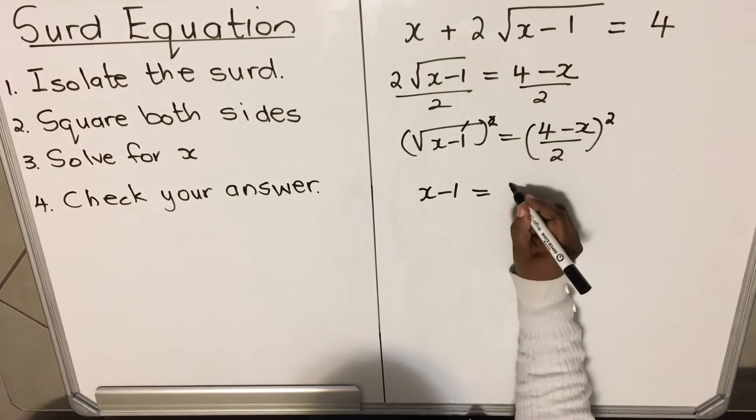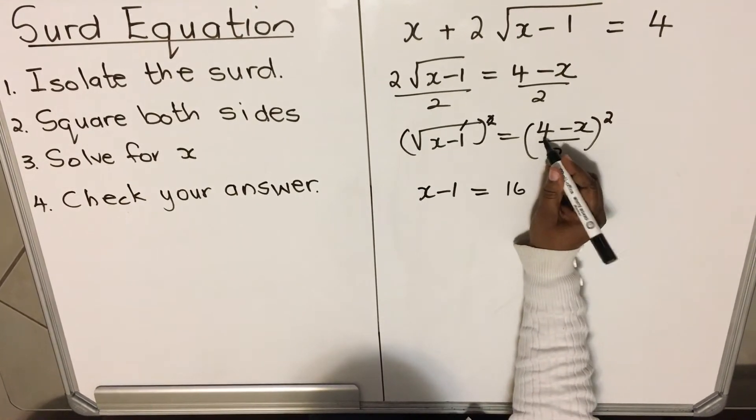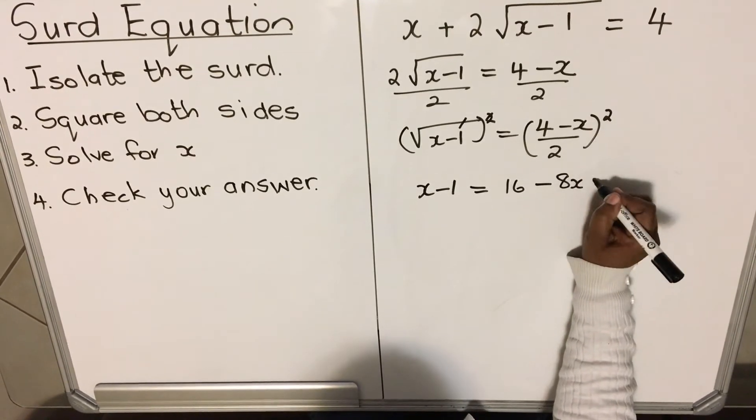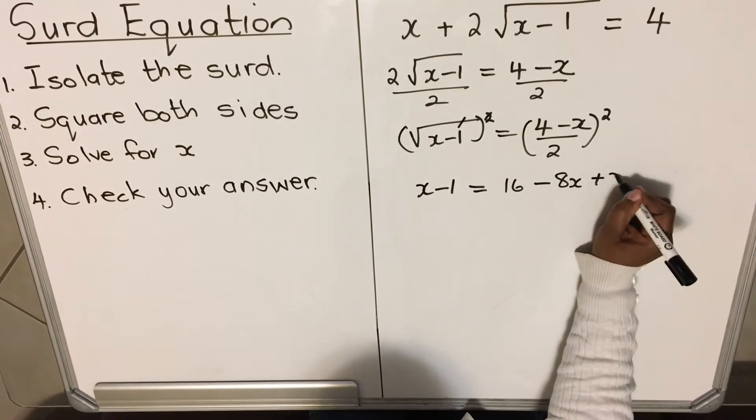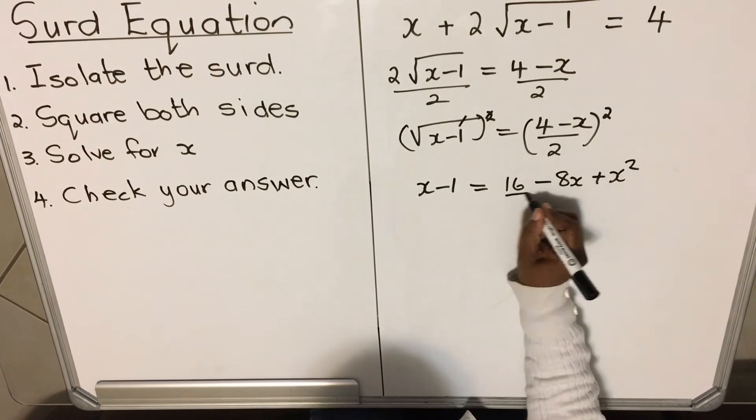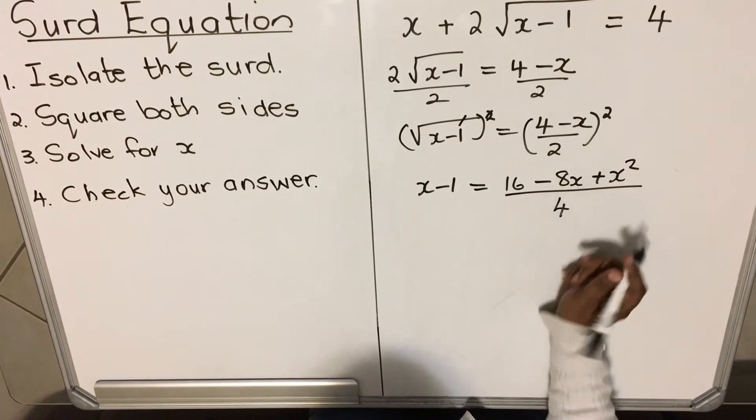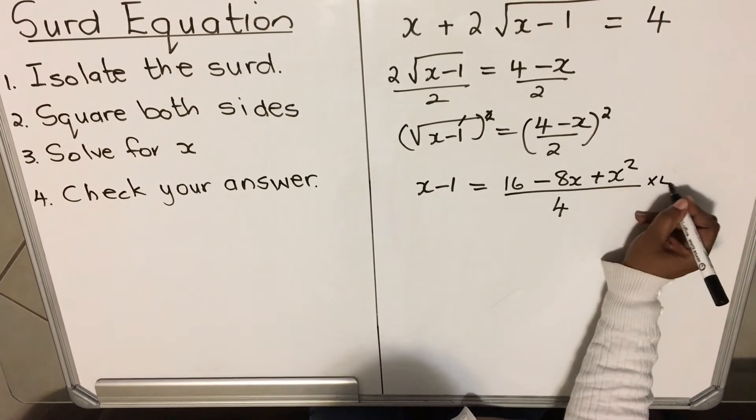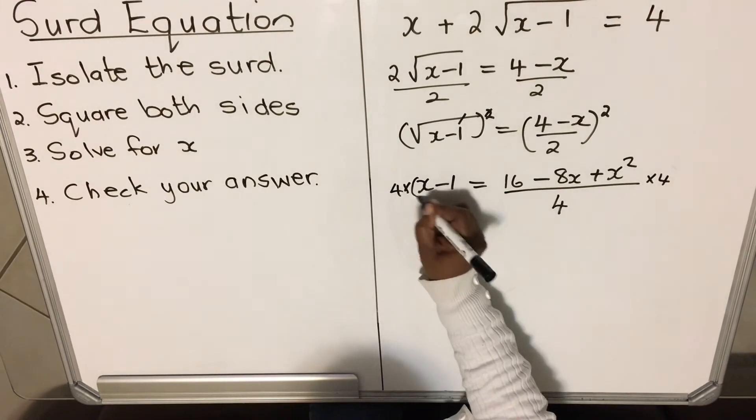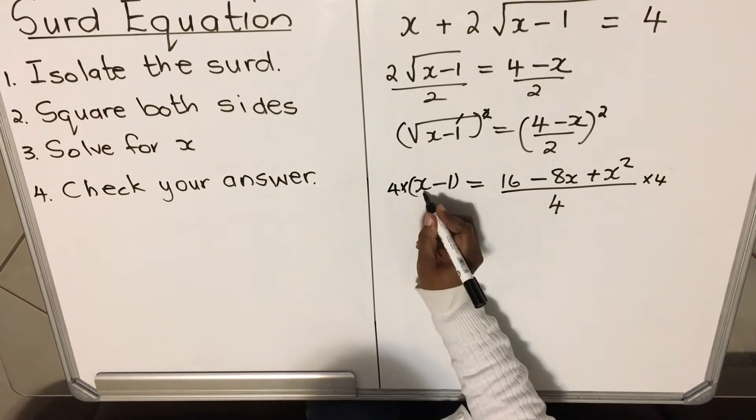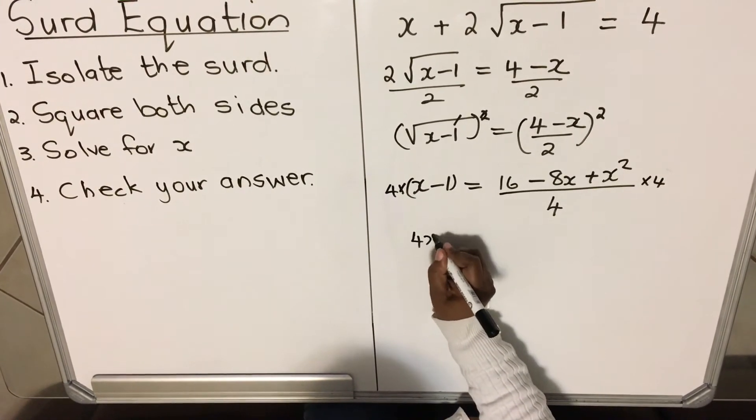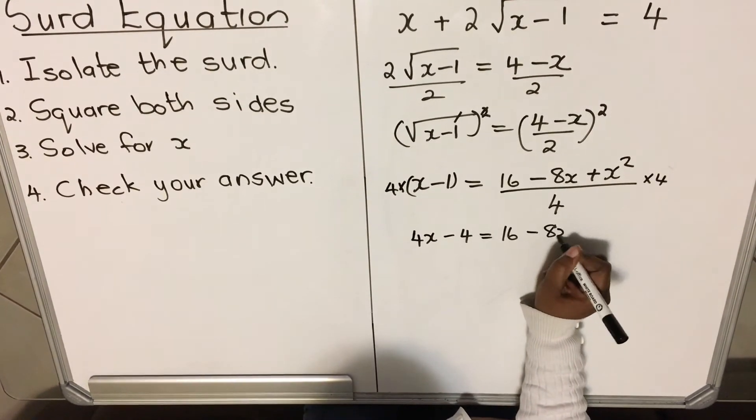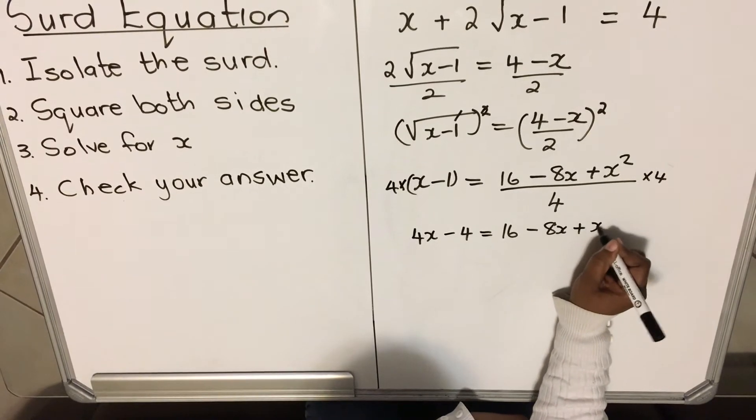First times first is 16, first times second times 2 gives minus 8x, and then x times x is plus x². Then divide by 2 times 2 is 4. To get rid of the denominator, I multiply by 4 both sides. So here I'm going to have 4x - 4 = 16 - 8x + x².